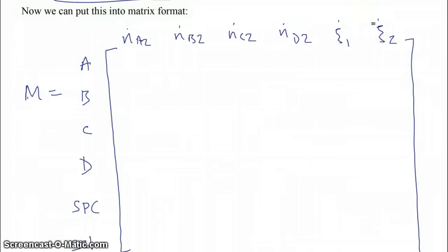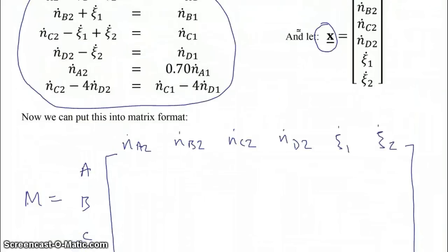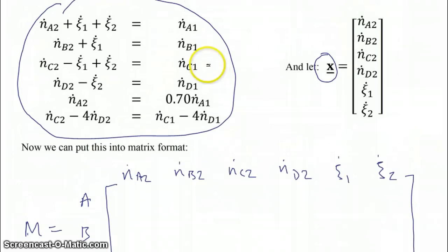And so if we look at the material balance for A, then in this material balance, the coefficient of N dot A2 is 1, so we'll put a 1 here. There's no N dot B2, N dot C2, or N dot D2 there. The coefficient for ξ1 is 1, and the coefficient for ξ2 is also 1.